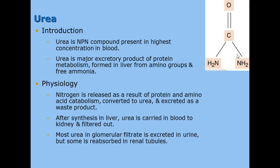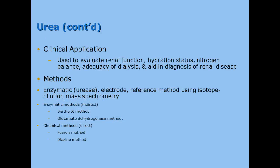Urea is not extremely toxic — definitely not as toxic as ammonia — and it makes its way to your kidneys where it is filtered out in the urine. It is a waste product of having excess protein or excess amino acids. We use this to evaluate renal function, hydration status, nitrogen balance, and adequacy of dialysis for someone in kidney failure who is on renal dialysis.